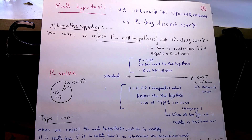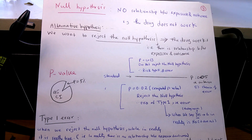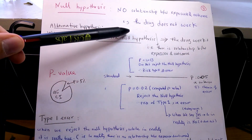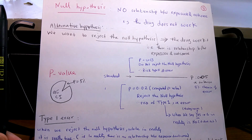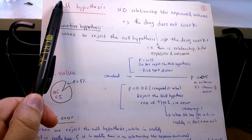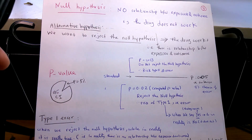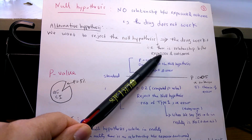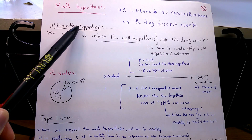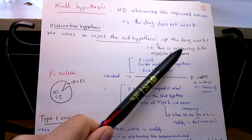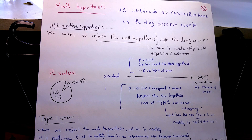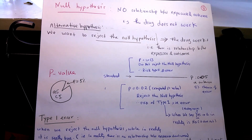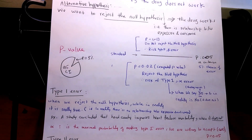Let's talk about the null hypothesis. The null hypothesis says there is no relationship between the exposure and the outcome — for example, that the drug we're studying doesn't work. We always try to reject the null hypothesis in order to prove that our drug works or that there is a relationship between the exposure and the outcome. The alternative hypothesis says there is a relationship between the exposure and the outcome.